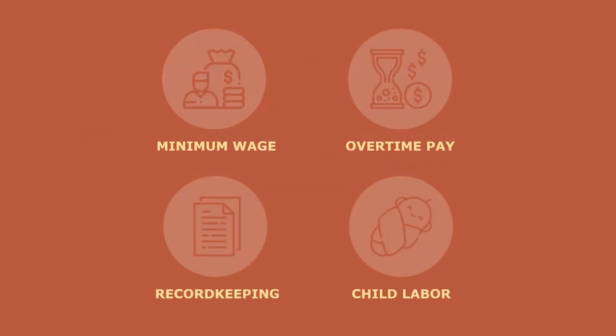Let's look at four primary areas of compliance with the FLSA: Minimum Wage, Overtime Pay, Record Keeping, and Child Labor Standards.